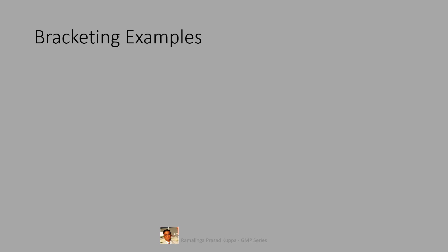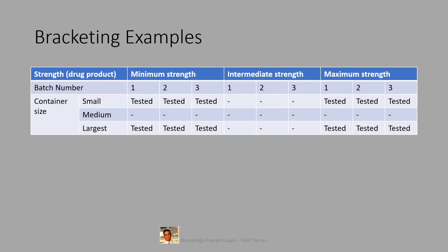Let us see the bracketing examples. See this bracketing example. The drug product bracketing design covers the minimum strength, maximum strength, minimum fill and maximum fill sizes. You can see that the medium strength and fill size is avoided for testing.